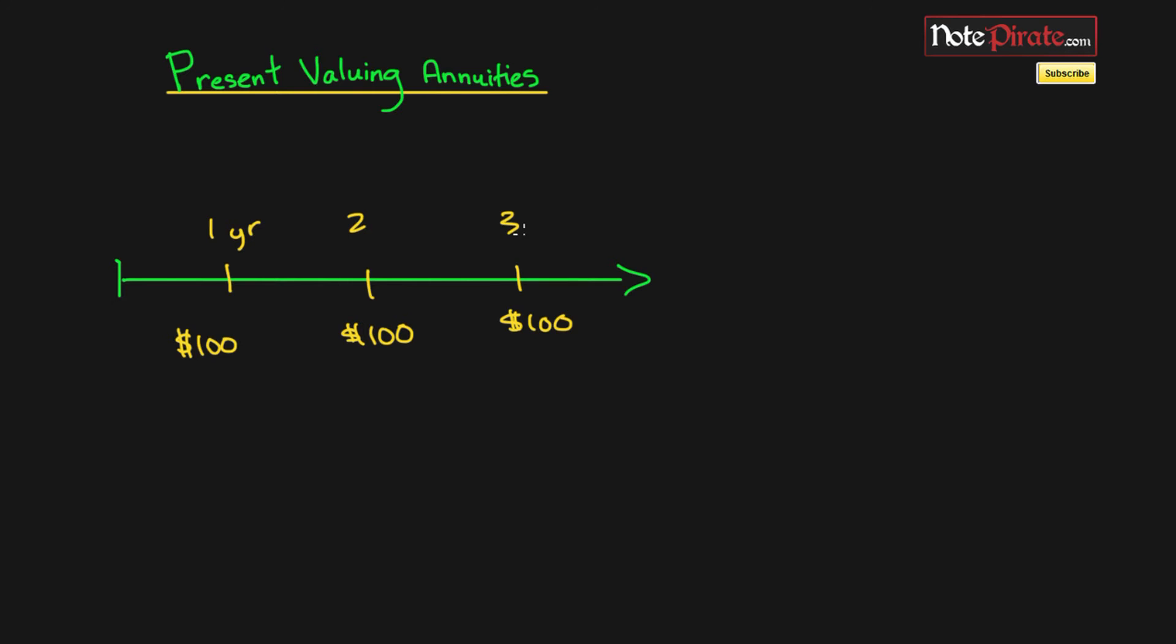Now one way we can actually do this is by taking the hundred dollars and discounting it individually just like we did in one of the previous tutorials, but that's kind of time consuming. So what we're going to be doing is we're going to be using an annuity formula.